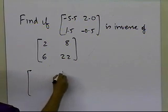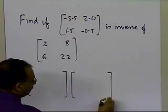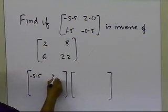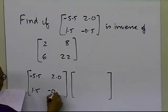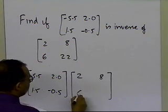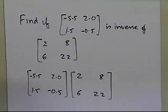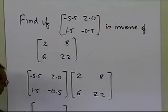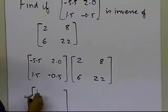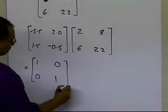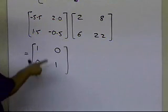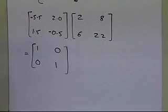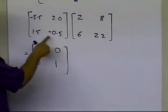So all I have to do is multiply [−5.5, 2.0; 1.5, −0.5] by [2, 8; 6, 22]. Following the rules of matrix multiplication — covered in a separate segment — you get [1, 0; 0, 1], the identity matrix. So this matrix times that matrix equals the identity matrix, which means it is in fact the inverse of that matrix.